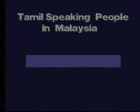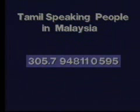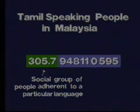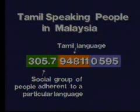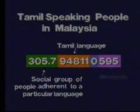Tamil speaking people in Malaysia: the number will be 305.7948110595. Here, 305.7 is the number for social group of people adherent to a particular language. 94811 is the number for Tamil language from Table 6, representing a social group of Tamil-speaking people. 0595 — there is a provision under 305.7 to add a country number; 0595 is for Malaysia from Table 2.